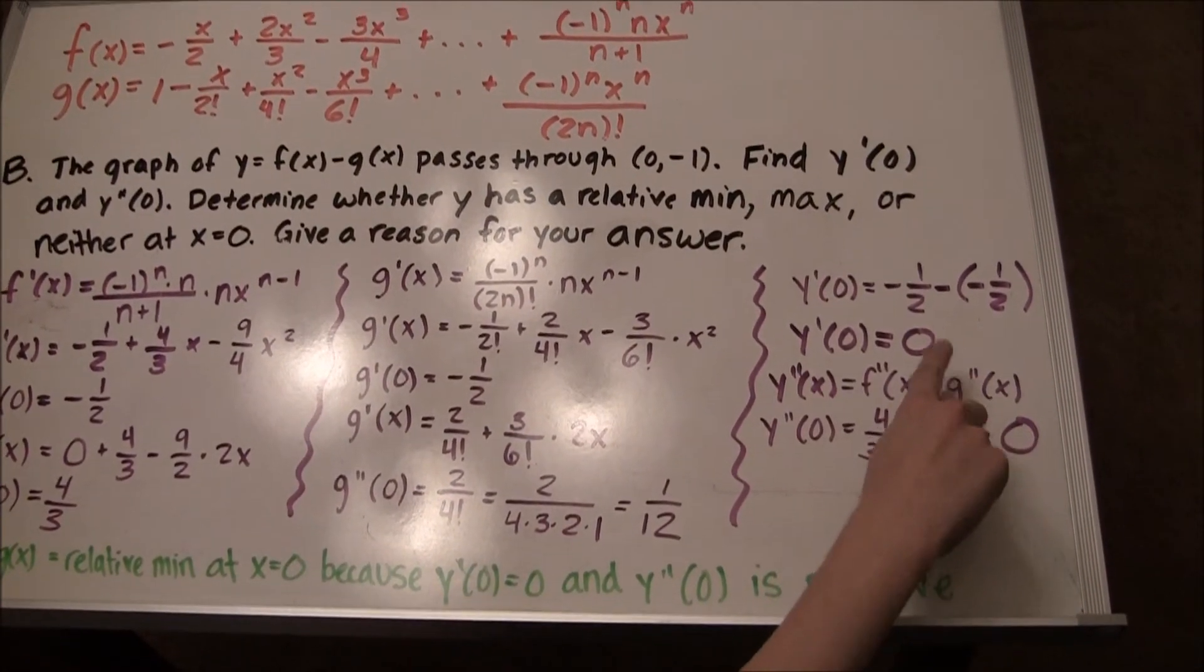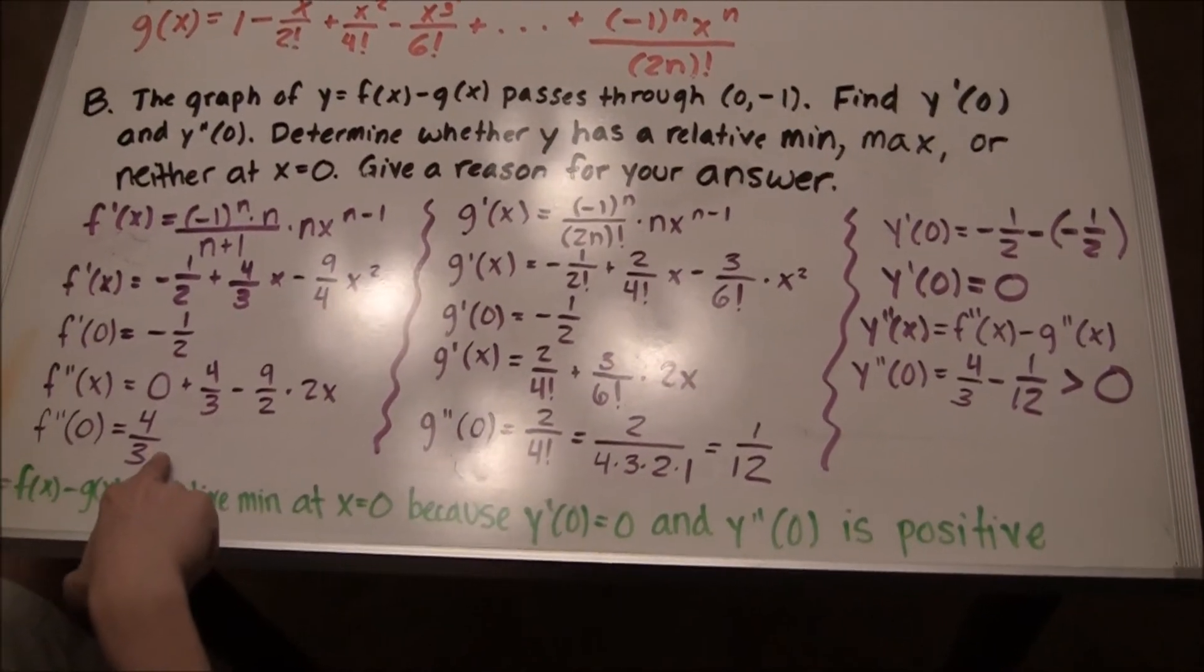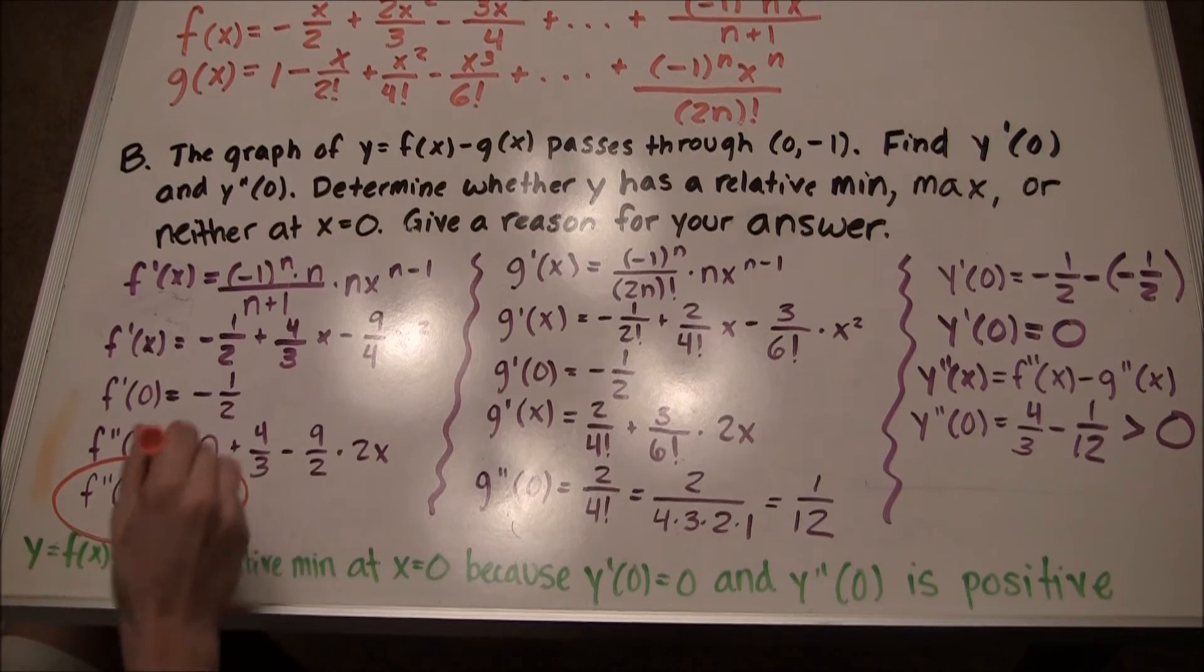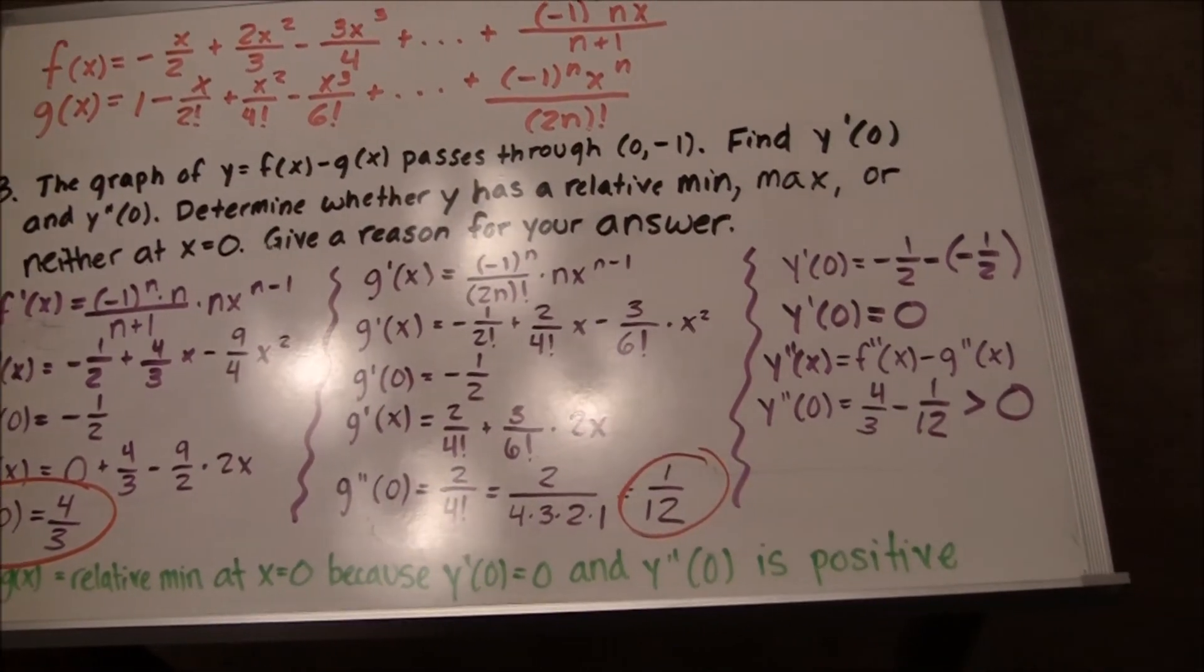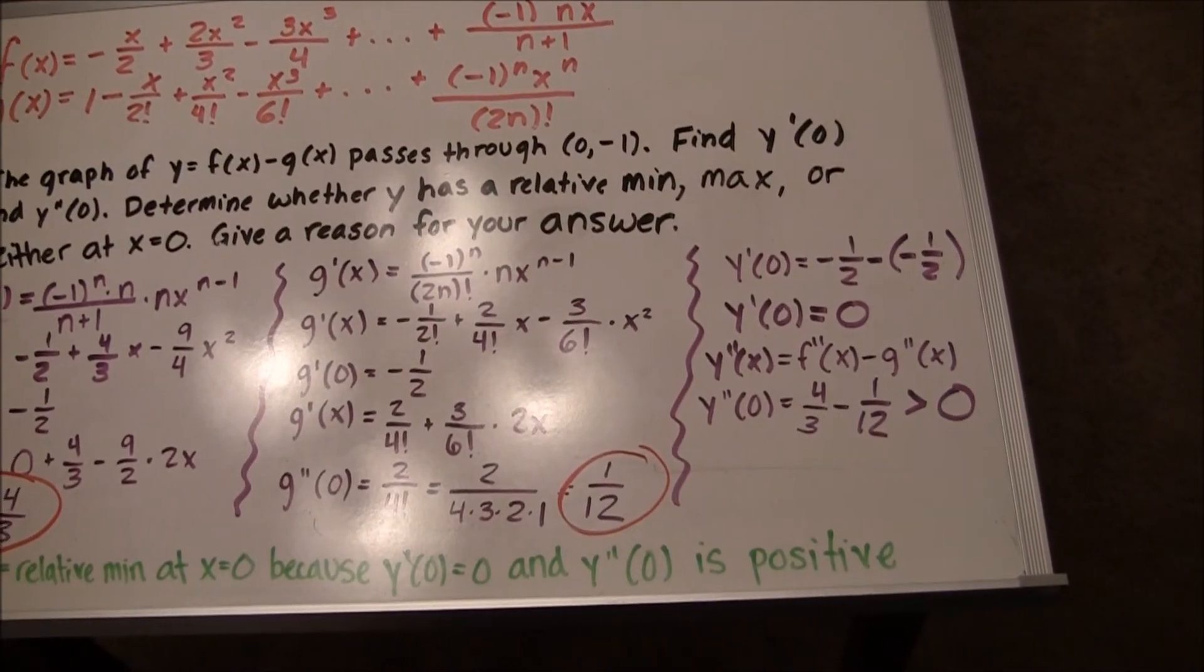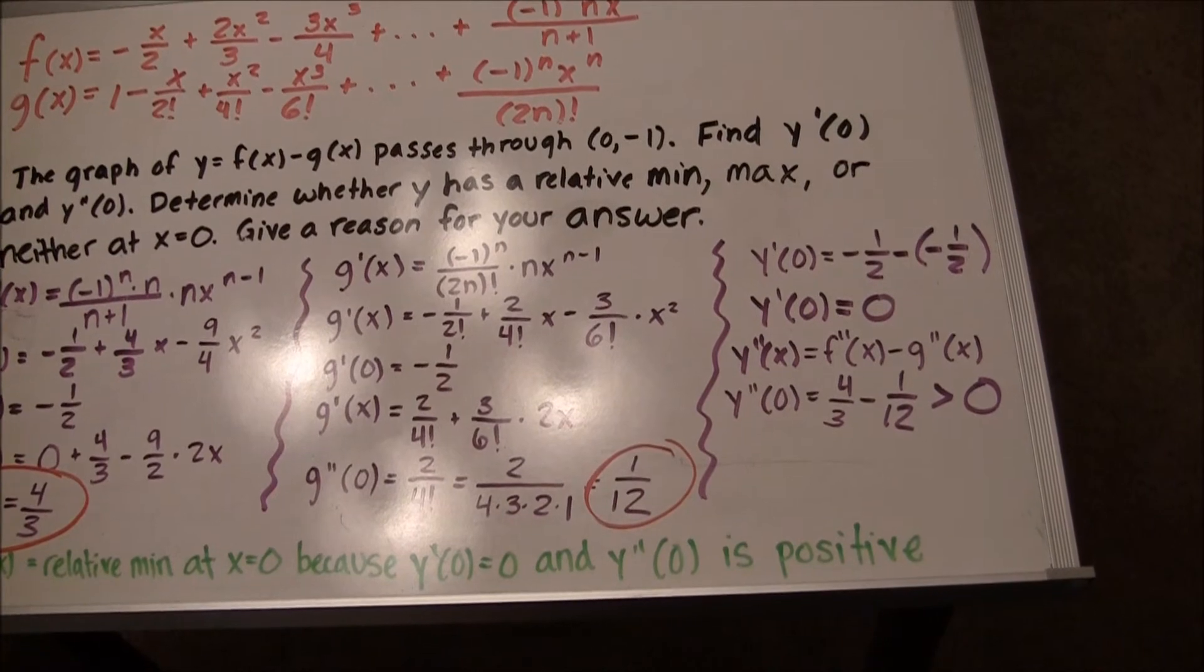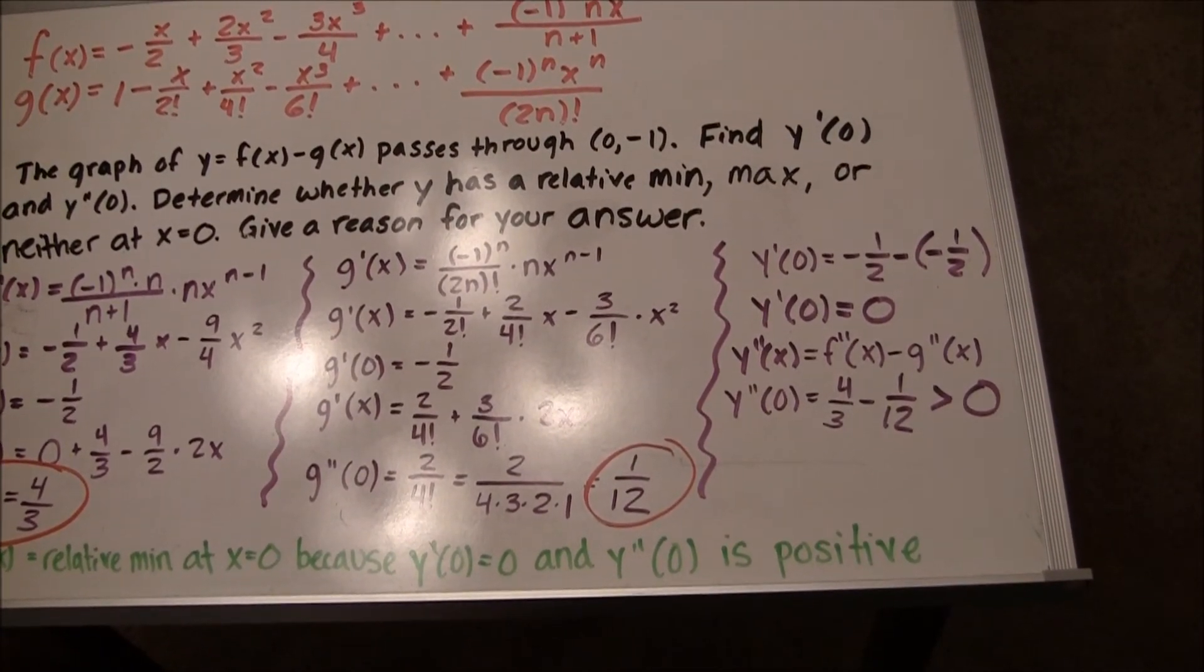Use the same method for finding g double prime of 0 and f double prime of 0. f double prime of 0 equals 4 over 3, and g double prime of 0 equals 2 over 4 factorial. In this case, y double prime of 0 equals 1 over 12. Because y prime of 0 equals 0, and y double prime of 0 is greater than 1, y has a relative minimum at x equals 0.